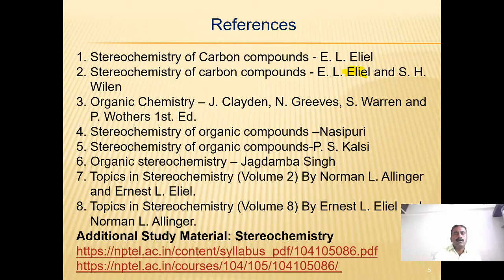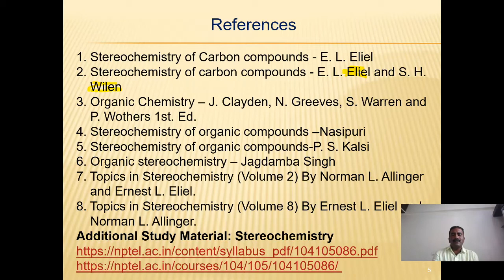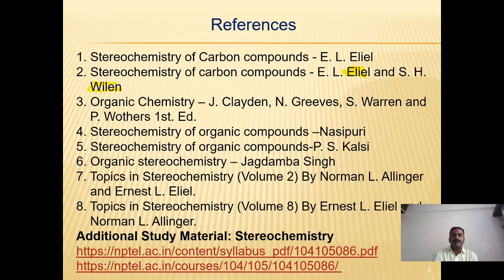The references for the stereochemistry section include: Stereochemistry of Carbon Compounds by Eliel and Wilen; Organic Chemistry by Clayden, Greaves, Warren, and Wothers, first edition; Stereochemistry of Organic Compounds by Nasipuri; Stereochemistry of Organic Compounds by P.S. Kalsi; Organic Stereochemistry by Jagdamba Singh; Topics in Stereochemistry Volume 8 by Eliel and Eliel. There are also two web links available for study material on the stereochemistry section.